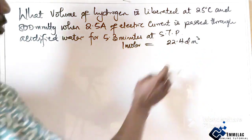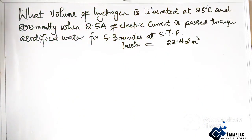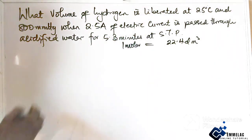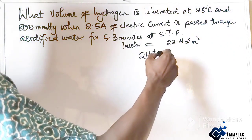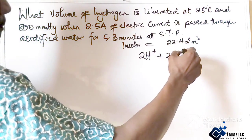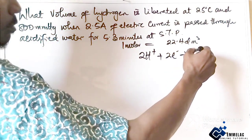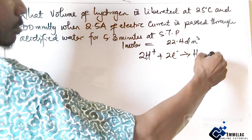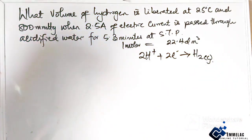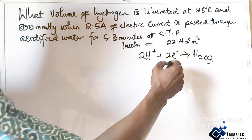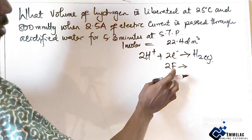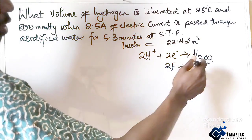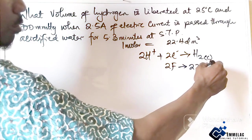Now writing the half equation for the substitution of the acidified water, we have this. So here we can see that two faraday definitely should give us one molar volume of gas.